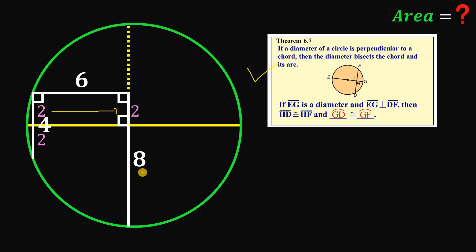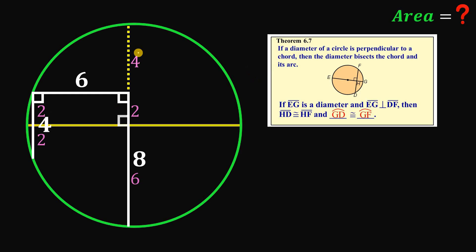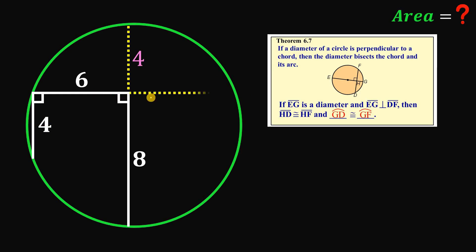Since the total segment along the diameter is eight, the bottom part must be six units. Because we drew a chord, the upper part of this chord also measures six units. Then the yellow segment must equal four units. Using this theorem, we confirm that this segment is four units.